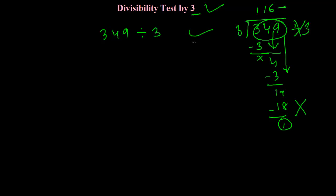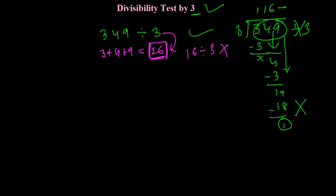So 349 is not divisible by 3. But here is the very simple shortcut trick: just add 3, then 4, then 9. 9 plus 4 is 13, and 13 plus 3 is 16. Since 16 is not divisible by 3, that is why the whole number 349 cannot be divided by 3.